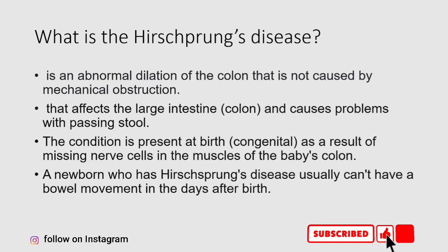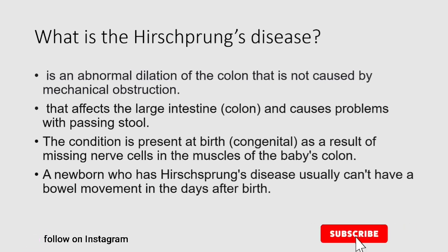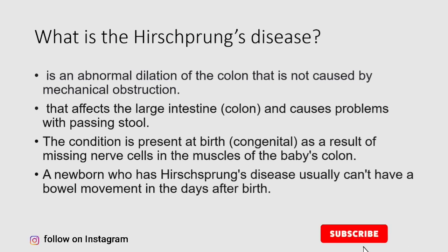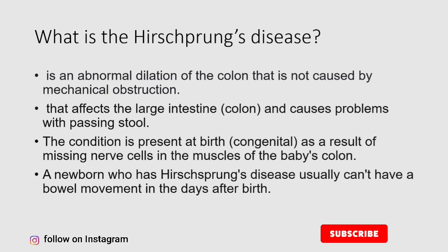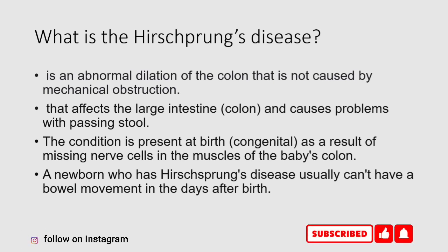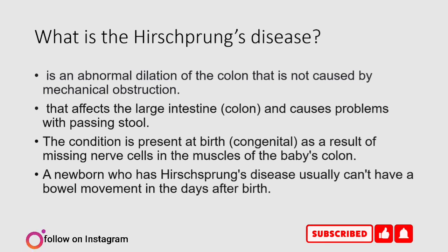What is Hirschsprung's disease? It is an abnormal dilation of the colon that is not caused by mechanical obstruction, that affects the large intestine and causes problems with passing stool. The condition is present at birth — congenital — as a result of missing nerve cells in the muscles of the baby's colon. A newborn who has Hirschsprung's disease usually can't have a bowel movement in the days after birth.